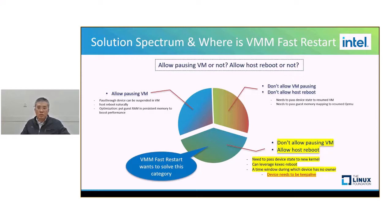Looking into the solutions, two questions need to be answered. First, do we allow pausing the VM? And second, do we allow rebooting the host? If we allow pausing the VM, then pass-through devices and kernel updates can be supported naturally, because pass-through devices can be suspended within the VM and then resumed when the VM restarts. If we don't allow pausing the VM, which means we can't require VM cooperation, then we will have two further choices.